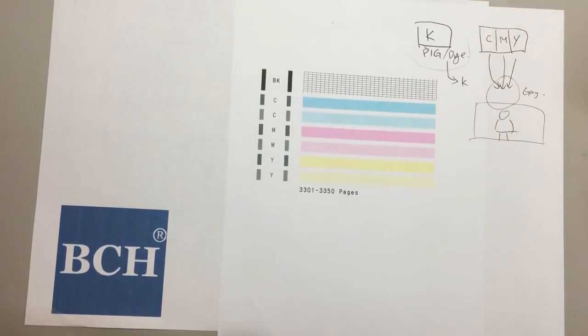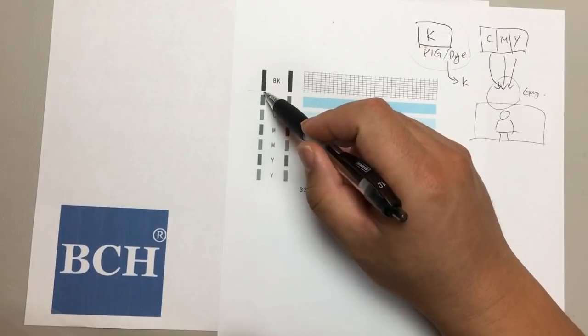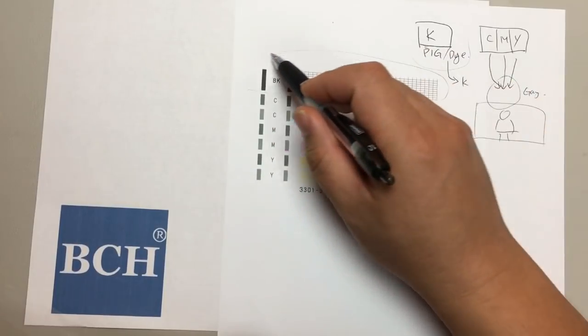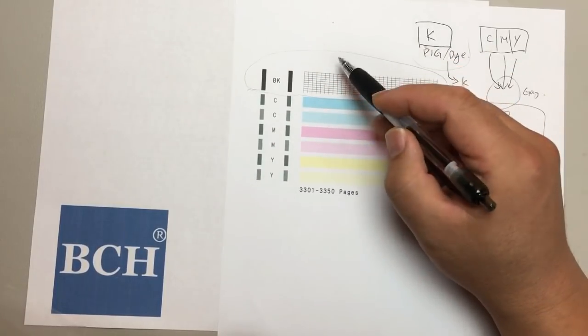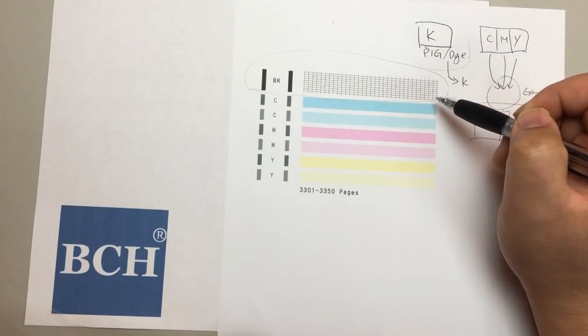The black, the Canon doesn't really need it to test the mixing. The Canon prints solely from the black. This shows you if the black is clogged or not.